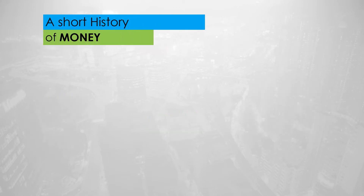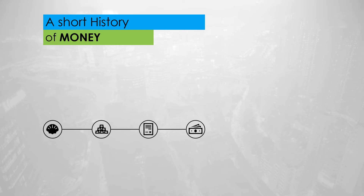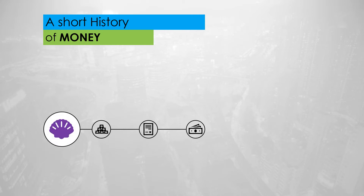Let's have a quick look at the history of money and understand where we started and how we got to where we are today. The first attempt to create money happened thousands of years ago in the form of salt and shells. This failed quickly since both salt and shells were lacking one important property: durability.